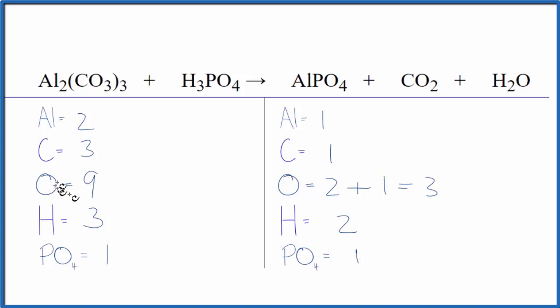I'm going to leave the oxygens till last. Start with the aluminum. So I'll put a two here. One times two, that balances the aluminum atoms. Two times the phosphate here, so that gives me two phosphates.